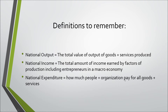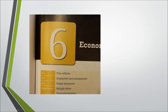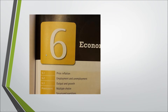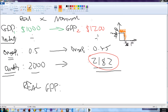National expenditure is how much people or organizations pay for all goods and services. GDP — gross domestic product — is defined as the total value of output produced in an economy. We can state it's output because the syllabus statement specifically refers to output. There are two types of GDP to understand.